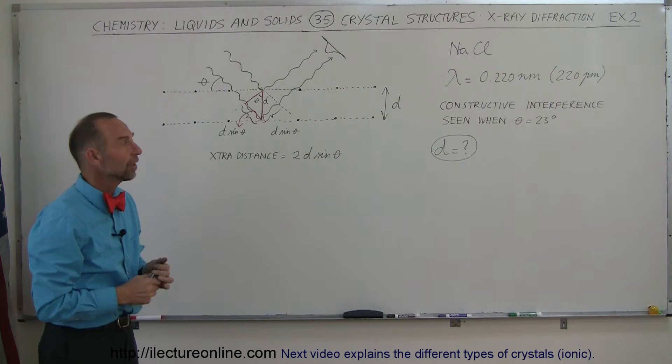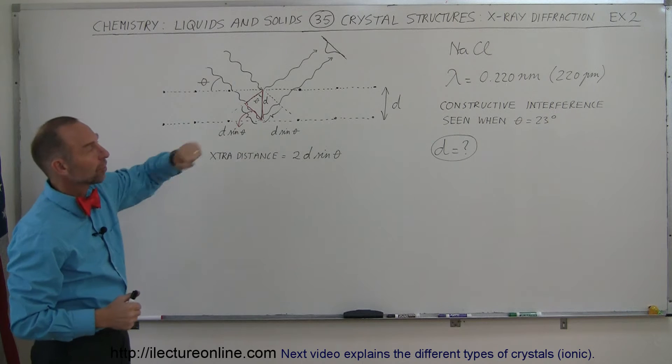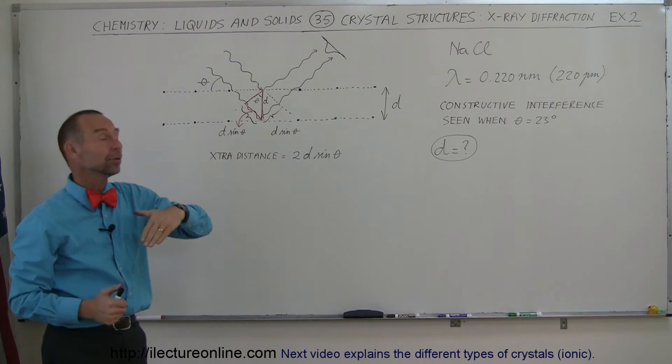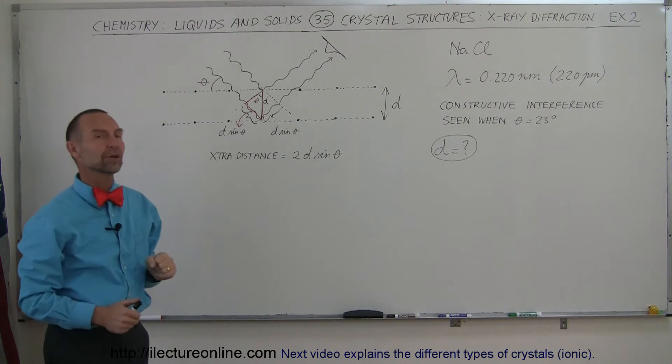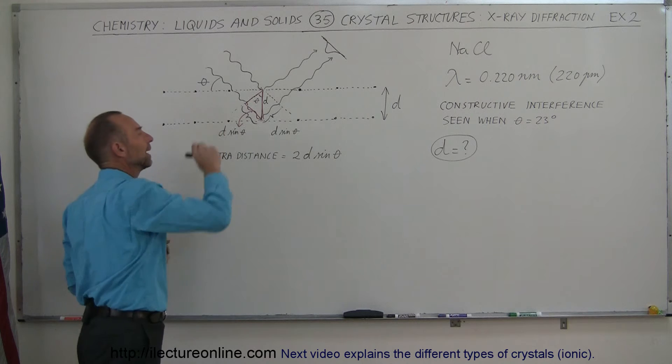which is 220 picometers, and constructive interference is seen by the detector when the angle between the horizontal and the incoming beam is 23 degrees. What is the separation distance in that crystal?